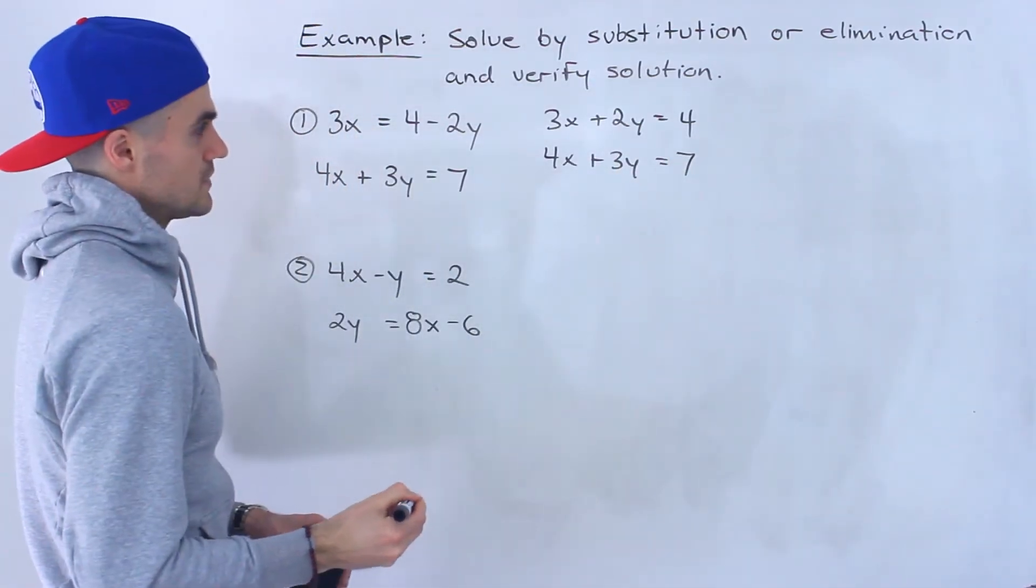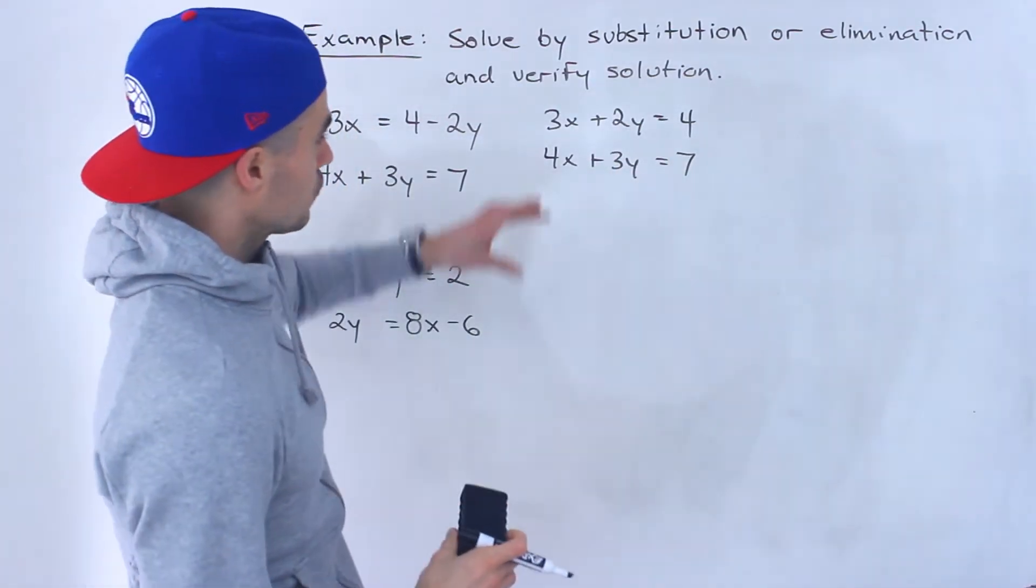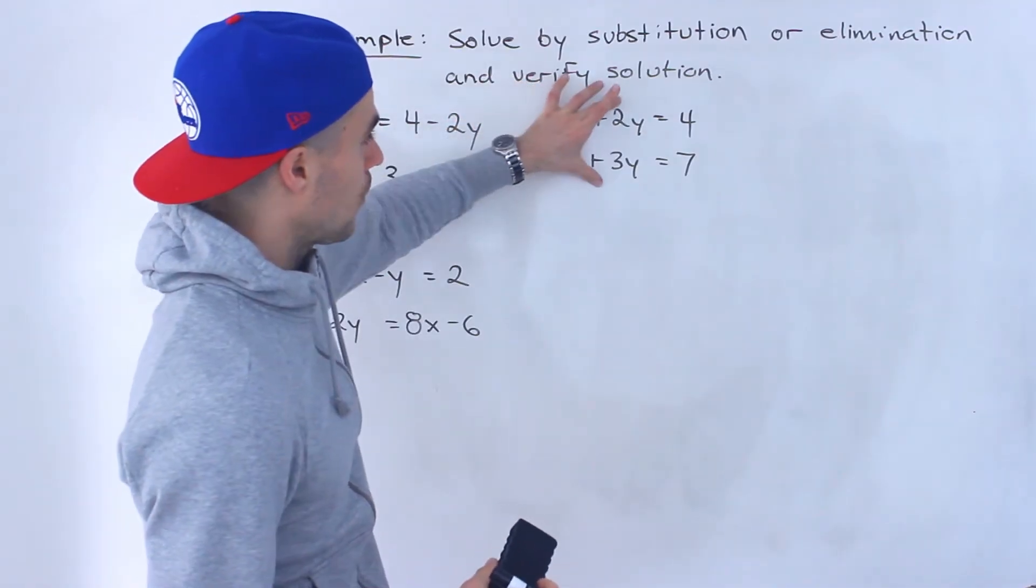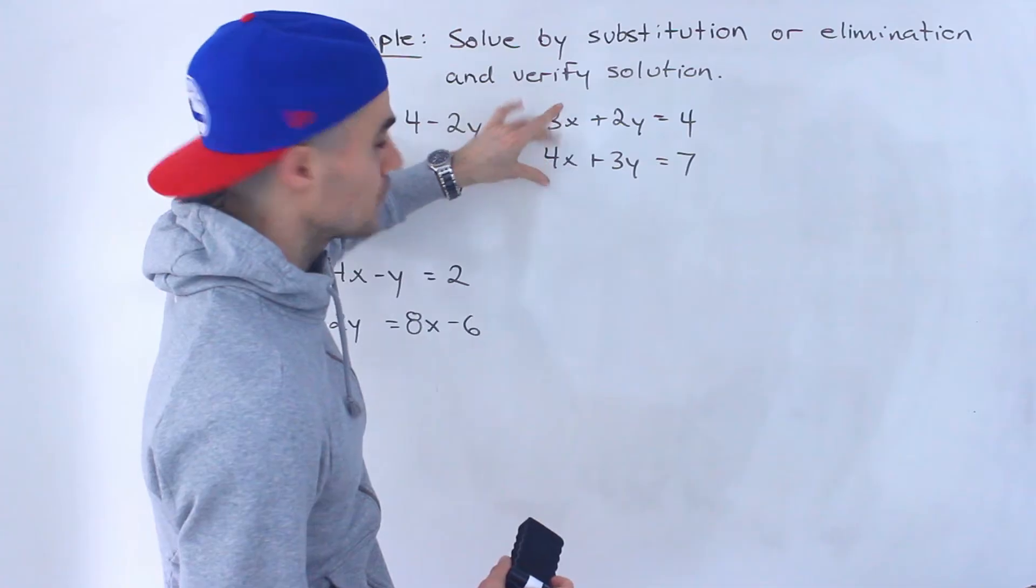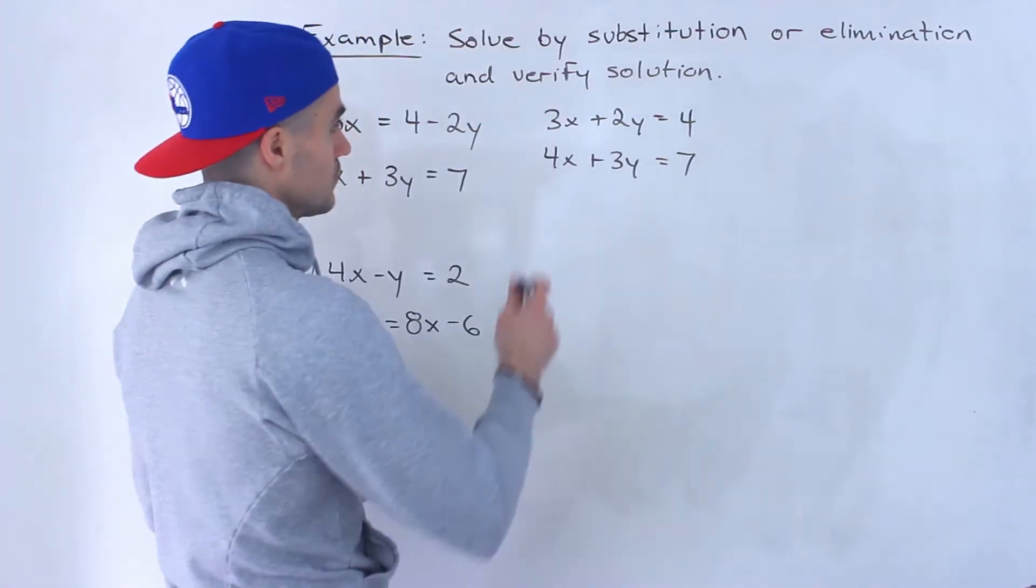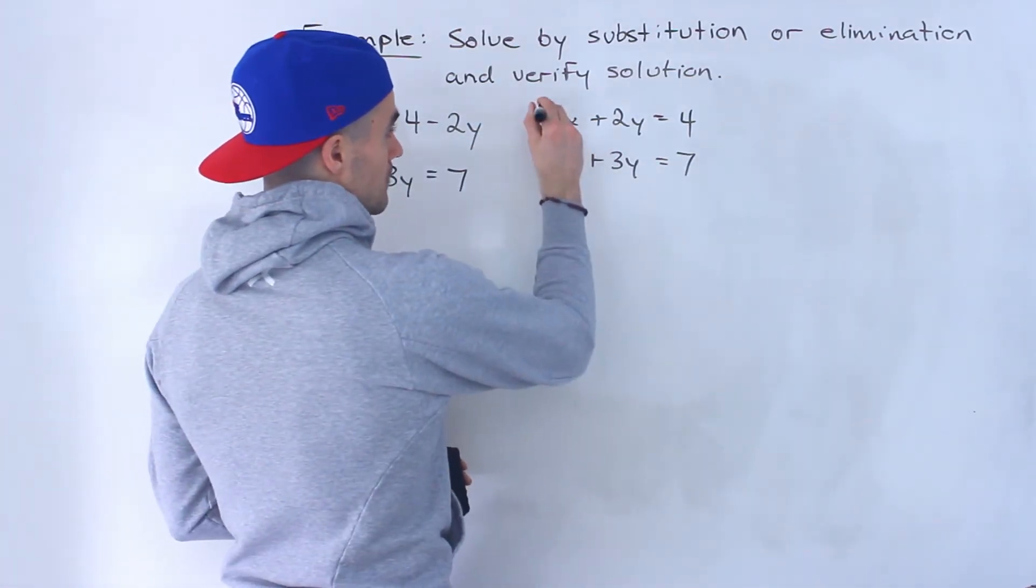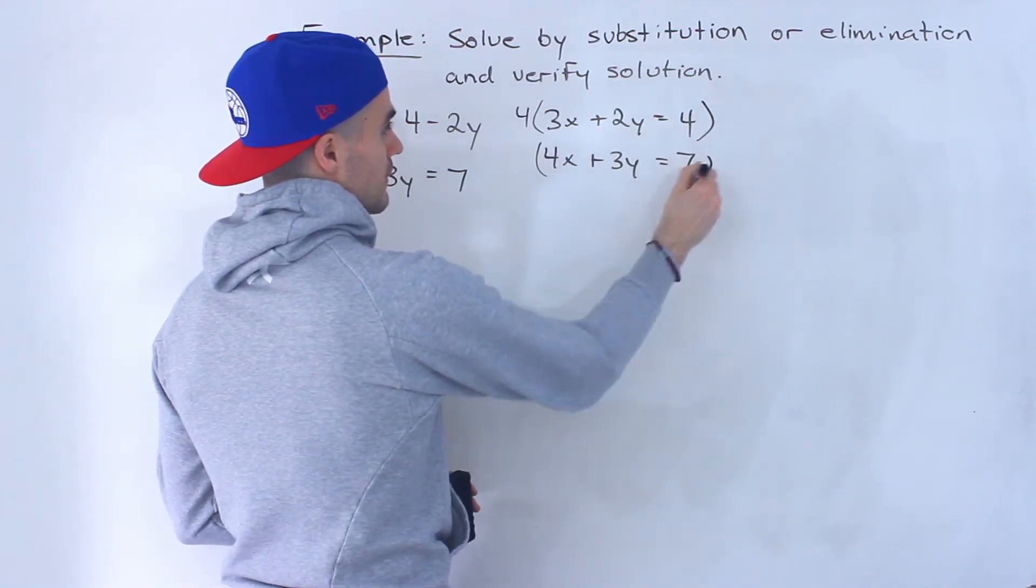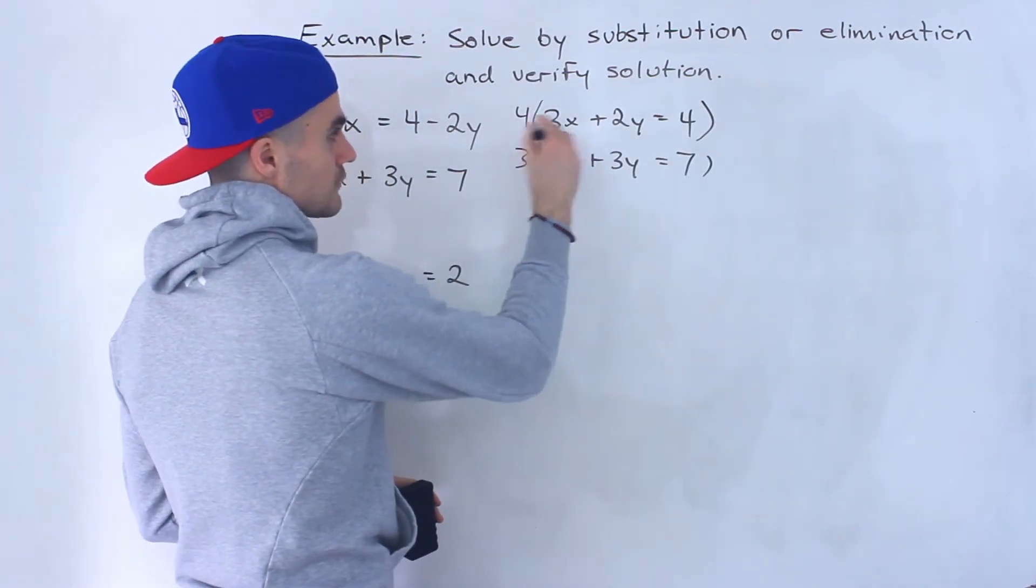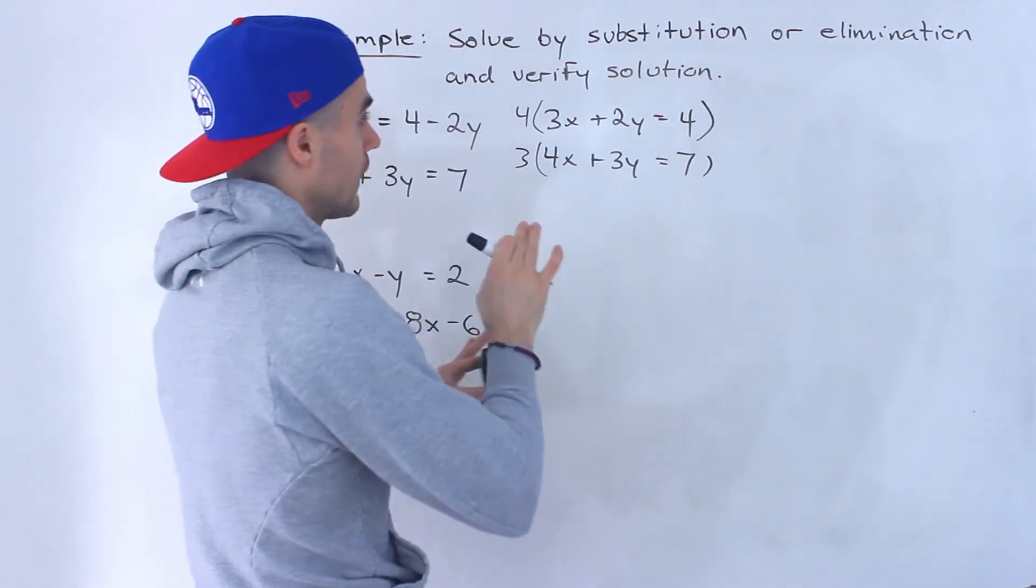We want to get rid of the x's or the y's. So I'm going to get rid of the x's. We want to get them both to be the same. What we can do is we can multiply this by 4 and then multiply this by 3. Notice we'll have 12x in front for both lines then.